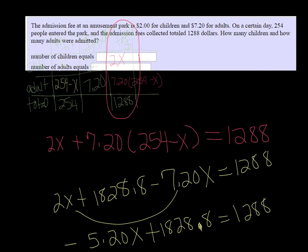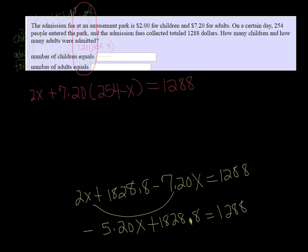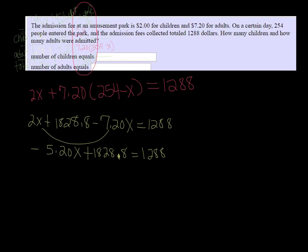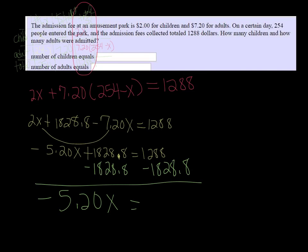Oops. Sorry guys, got to squish things. And then I subtract the 1828.8 on both sides. So we have negative 5.20X is equal to, let's see, 1288 minus 1828.8, negative 540.8. So finally I'm going to divide that by negative 5.2, and I get that X is 104.